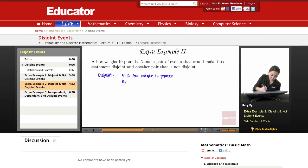And then for B, our second statement, to make it disjoint, a box, the same box, weighs less than 8 pounds. It wouldn't make sense, right? So this is disjoint.